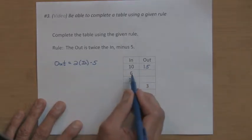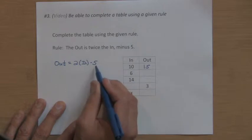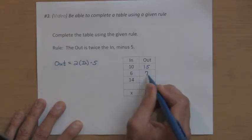For six, I'm going to take two times the in. Two times six is 12, and 12 minus five gives me seven.